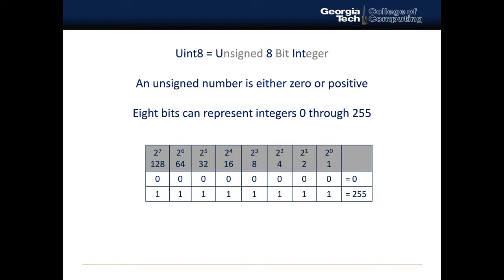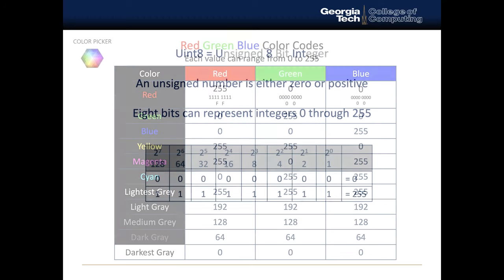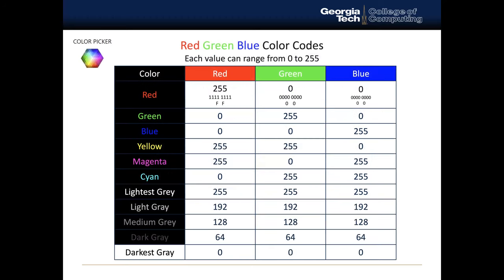255 is the max. And so that means that we can pick between 256 different values for each RGB component.